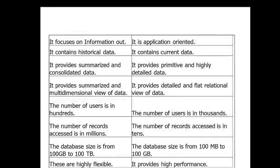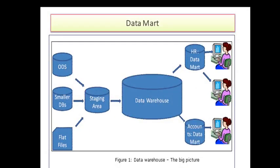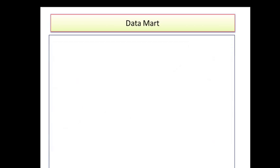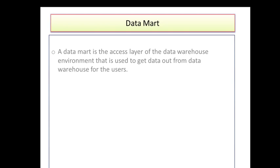The next topic is data mart. A data mart is nothing but a slice of a data warehouse. It is built on top of the data warehouse. Looking at the picture — the ODS provides information that is loaded into the staging area and then into the data warehouse. On top of the data warehouse we build different data marts, such as an HR data mart and an Accounts data mart, each accessed by their specific analyst teams. So a data mart is an access layer on top of the data warehouse to get data for specific users.